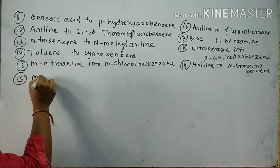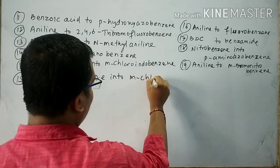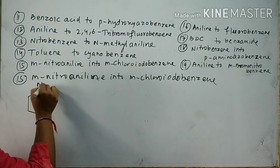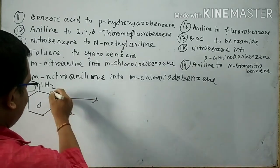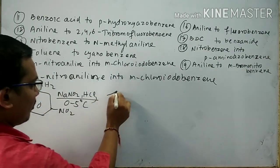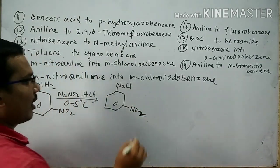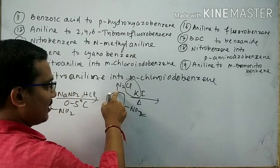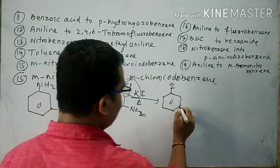Question number 15: Convert meta-nitroaniline to a target compound. First, meta-nitroaniline reacts with NaNO2 in HCl at 0 to 5 degrees centigrade; NH2 is converted into N2Cl. The NO2 group is at the meta position. This product reacts with KI with heat; HCl is lost, iodine attaches, and nitrogen gas is released as a byproduct. The resulting compound has iodine and NO2 at the meta position — meta-iodonitrobenzene.